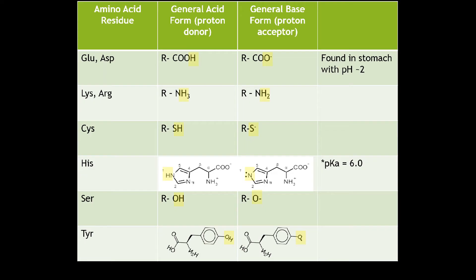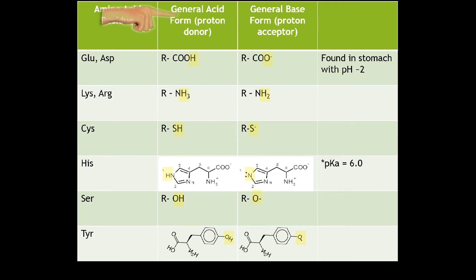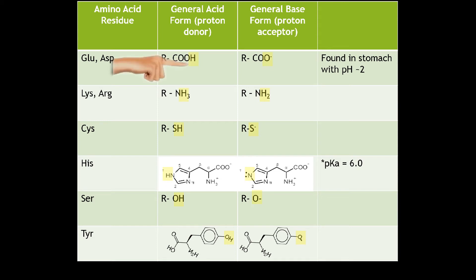Let's look at some examples with this chart. We have amino acid residues — the general acid form is the proton donor, and the general base form is the proton acceptor. With glutamic acid and aspartic acid, we have the carboxylic acid group. That hydrogen is going to be donated when it's in the general acid form, and it can accept that hydrogen back in the base form. In the case of a low pH environment, like the stomach, pepsin is going to have some of these acidic amino acid residues prevalent in its active site.